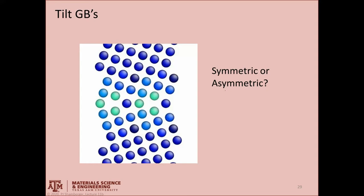Let's look at this example. Is this a symmetric or an asymmetric tilt grain boundary? The first thing you want to do is identify where the interface is — in this case, the interface lies along a plane here. If I draw a set of lattice parameters, I can quickly see that these two regions have both been rotated some angle relative to the plane, and it's an equal and opposite angle. This angle here is equal and opposite to this angle here. So this is an example of a symmetric tilt grain boundary.